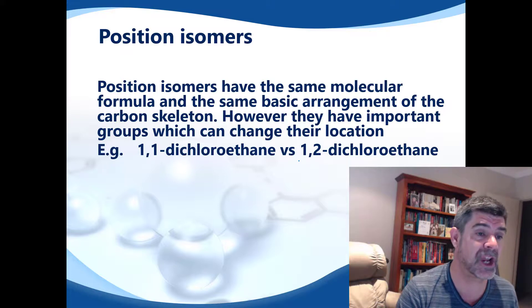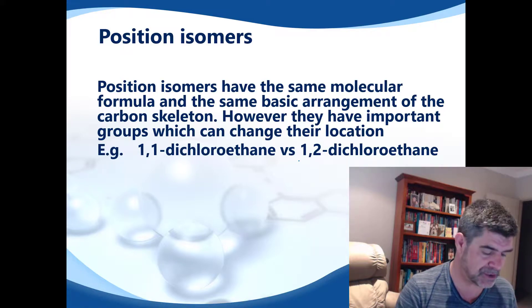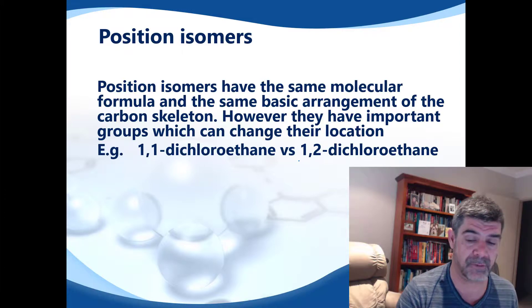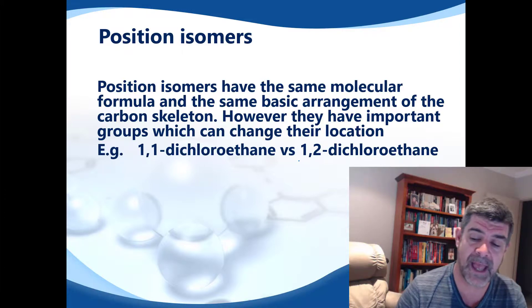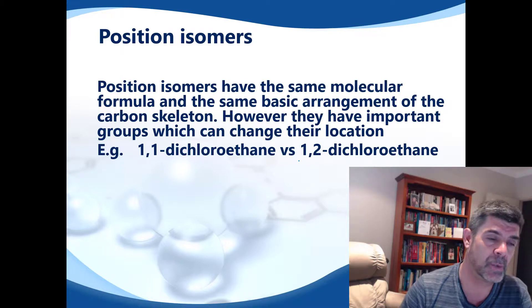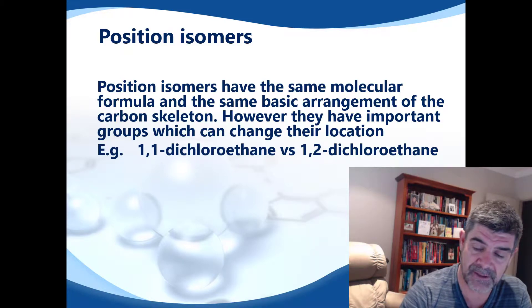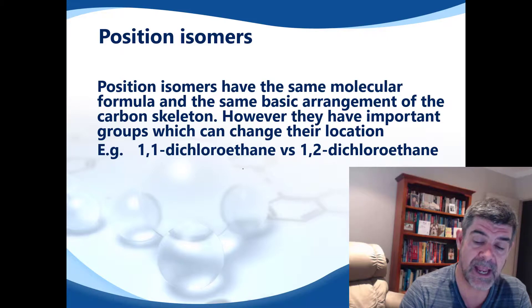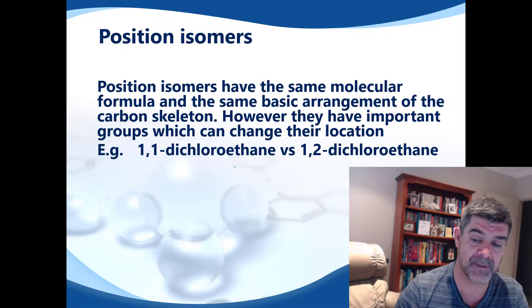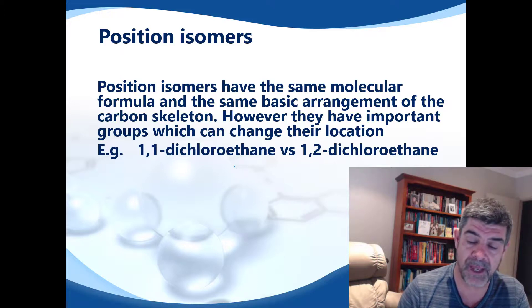This is where the chain length doesn't change, but the position changes. The example I've given is the one from the beginning — where we have our important functional groups changing their location, we have two different isomers, and these would be called position isomers. The ones we drew to explain isomerism in the first place, the 1,1-dichloroethane and the 1,2-dichloroethane, would be called position isomers.